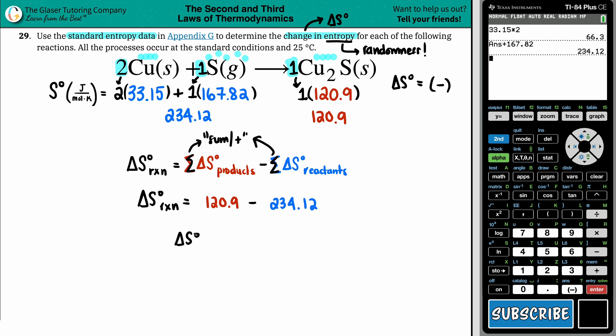Delta S for my whole entire reaction is, let's go to calculator again, 120.9 minus that answer. And I get negative 113.22. However, for sig fig purposes, since I only have one sig fig after the decimal here, that's the most I can have. So I'm going to cap it at negative 113.2.